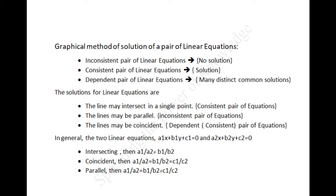Graphical method of solution of a pair of linear equations: a pair of linear equations which has no solution is called an inconsistent pair of linear equations. A pair of linear equations which has a solution is called a consistent pair of linear equations. A pair of linear equations which are equivalent has infinitely many distinct common solutions — such a pair is called a dependent pair of linear equations in two variables. Note that a dependent pair of linear equations is always consistent. If the lines intersect in a single point, the pair of equations has a unique solution, that is, a consistent pair. If the lines are parallel, the equations have no solution, that is, an inconsistent pair.